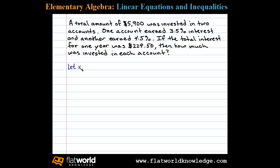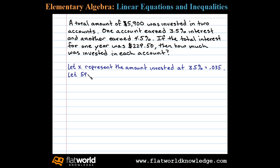Let X represent the amount invested at three and a half percent interest. If we do that, then we can let the rest be represented by the total, which is five thousand nine hundred minus the amount invested in the other account. So five thousand nine hundred minus X will represent the amount invested at four and a half percent.